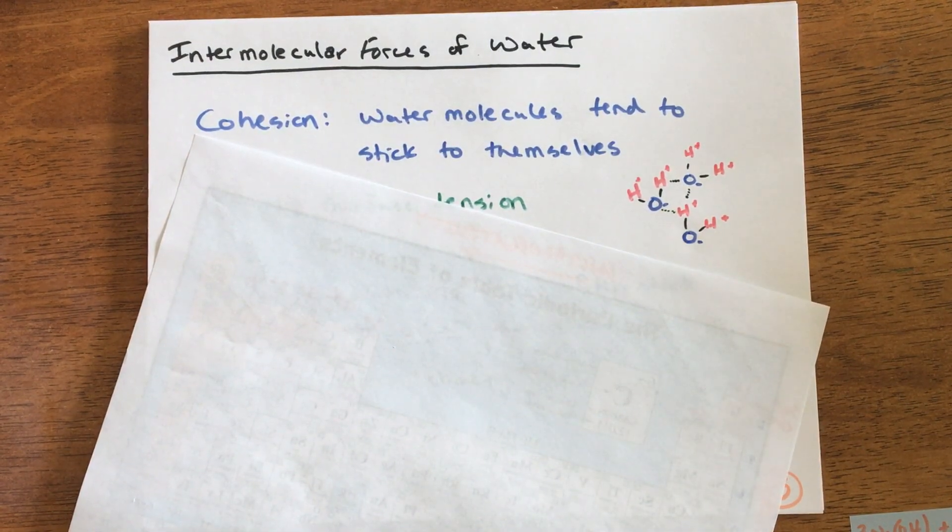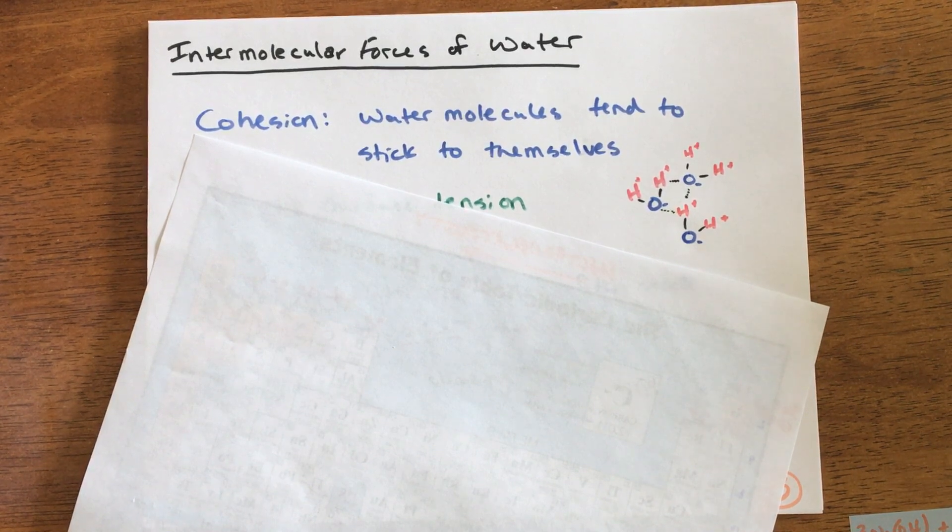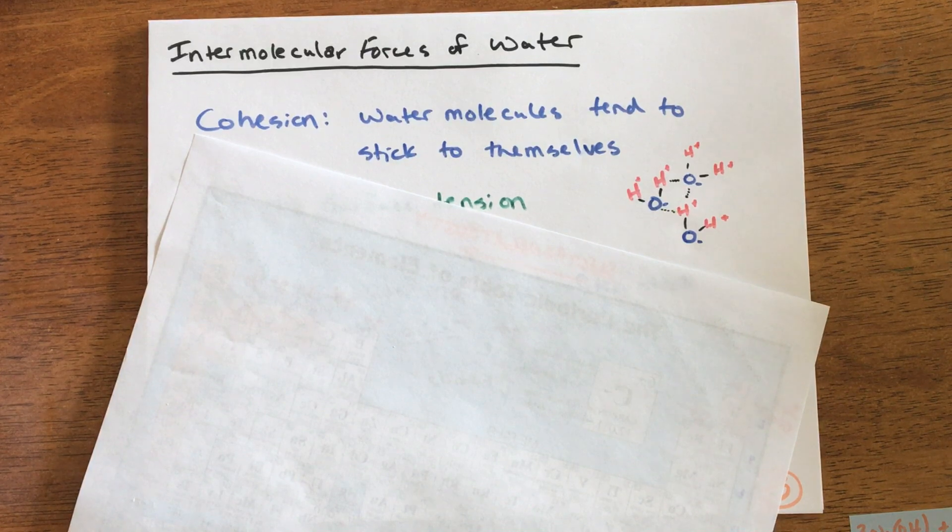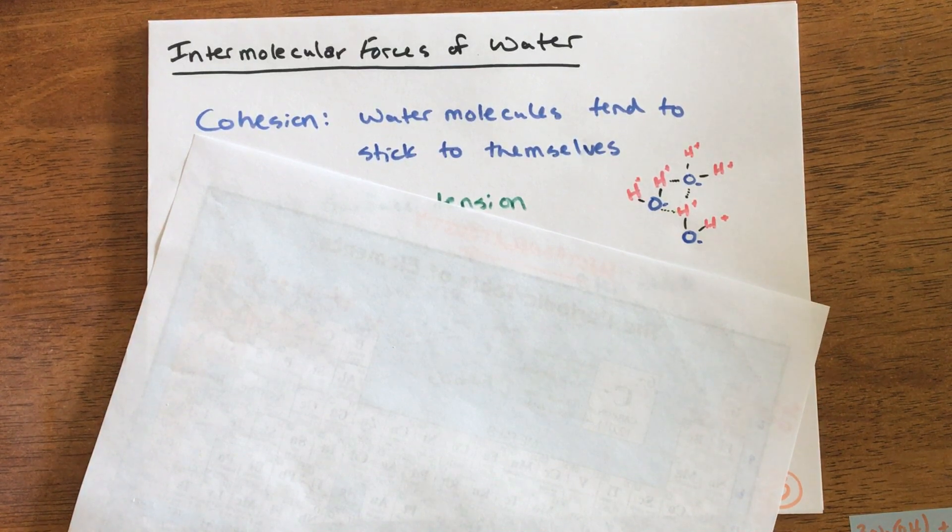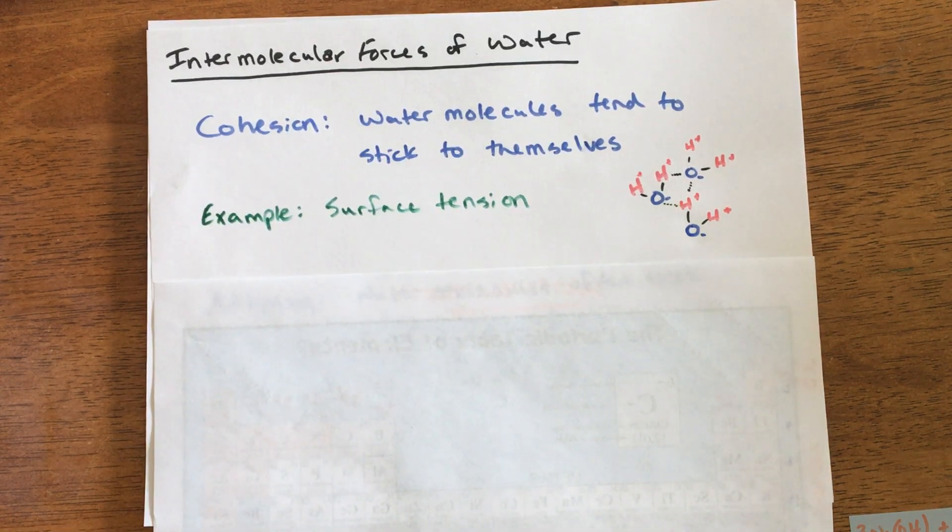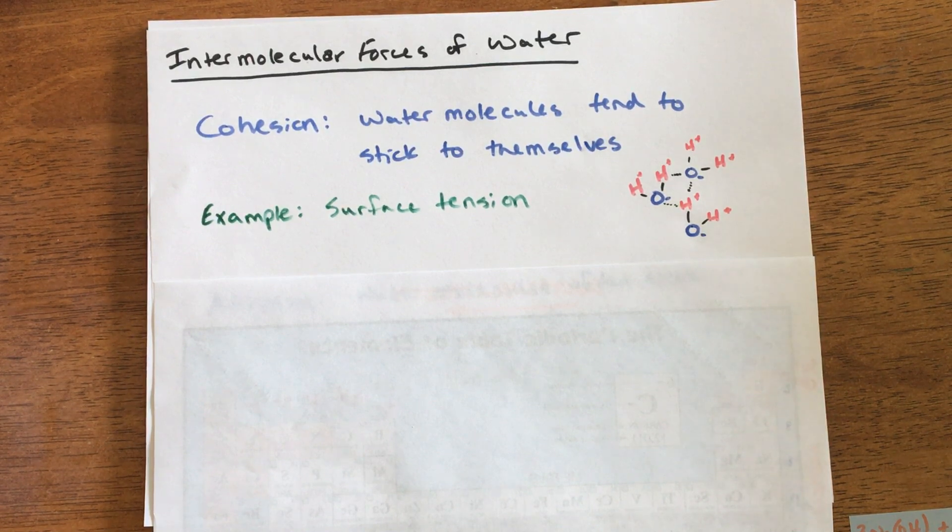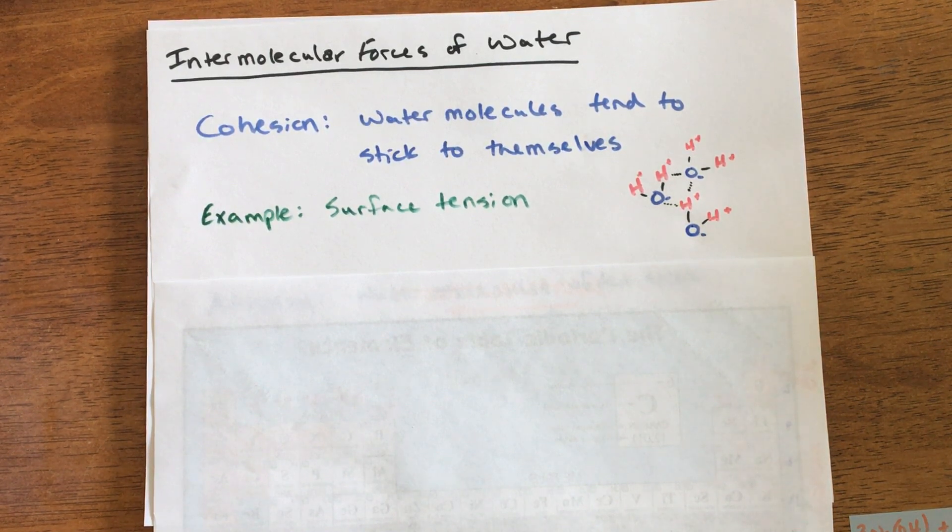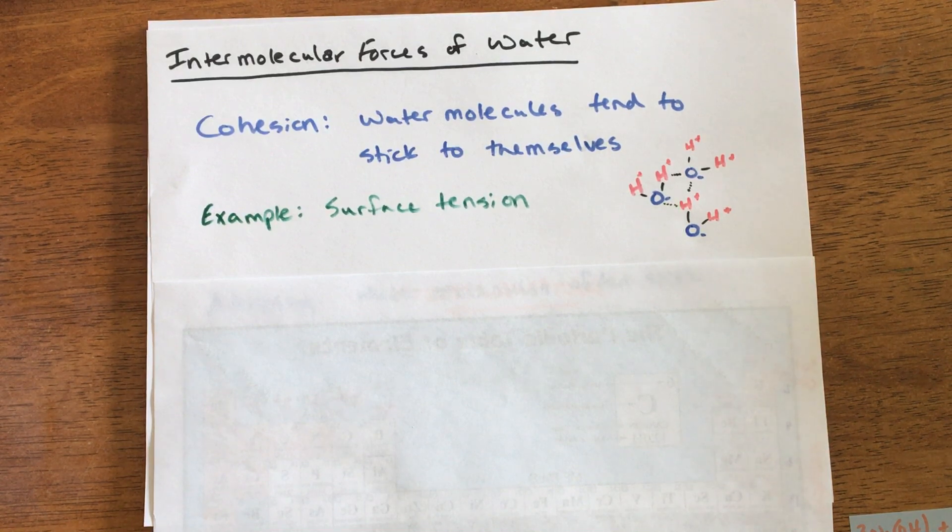One thing you've also seen in class is that when we tried to boil water or unfreeze and melt water, it takes a lot of energy, and that's because the water molecules are stuck together really well. Our example of this is surface tension. You've probably noticed this—the top of water, the water molecules are sticking to each other so strongly it takes a little bit of force to break through that. So some things can float on top of water without breaking that surface tension.